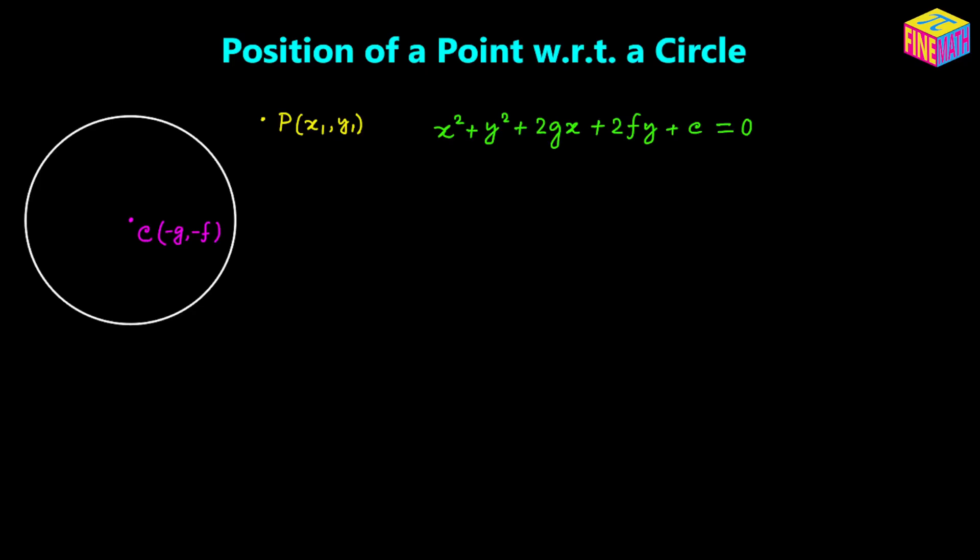Now let's connect point P with the center of the circle. Let's suppose CP actually intersects the circle at point Q, and let's assume the coordinates of point Q are (x, y). Let's think about the distance CP. If this distance is greater than the radius, then you can clearly imagine that point P would be outside of the circle.